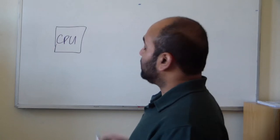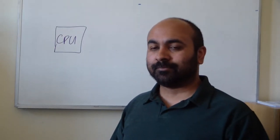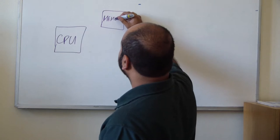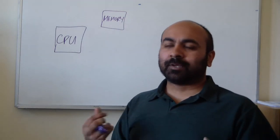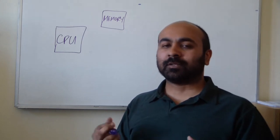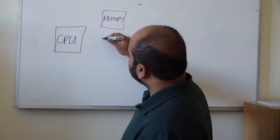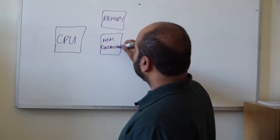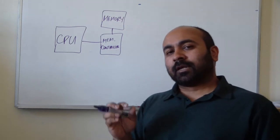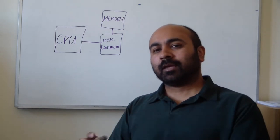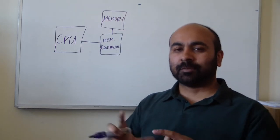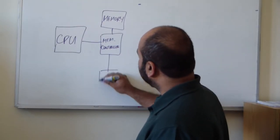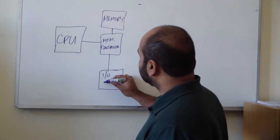The CPU, as we all know, does the core computation of your computer — it is the thing that actually executes instructions. We also have this thing that we always seem to be running out of, called memory, and memory is where data is stored while the computer is on. Somewhere between these two things we have a memory controller, which interfaces between the CPU and the memory. You may have lots of little banks of memory in your computer, and this memory controller manages all of this as a resource.